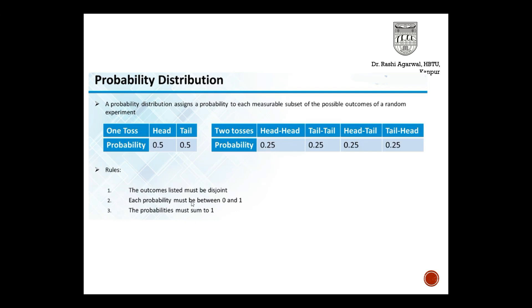Now there are certain rules. Each probability is always between 0 and 1, and if I add up all the probabilities, it should equal 1 — because something or the other has to happen. So the probability of all events is always 1.